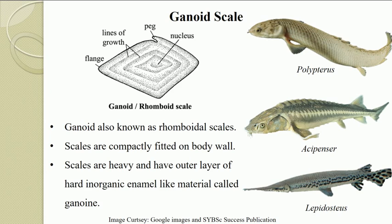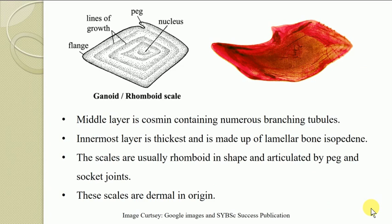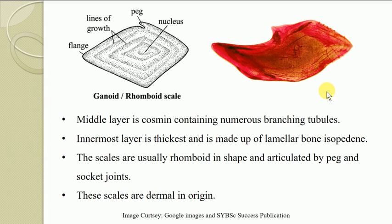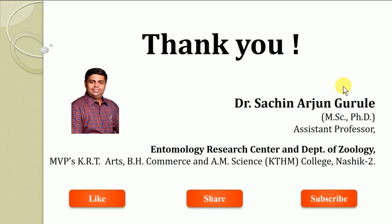In this way, we can recognize the different kinds of scales on the skin of fishes. Here again in this diagram you can see the rhomboidal or ganoid kind of scales, which are provided with a peg-like structure joined to the skin via a socket joint. This concludes the topic of types of scales in fishes. Thank you very much.